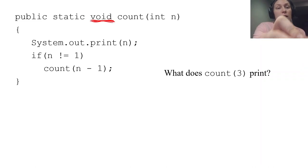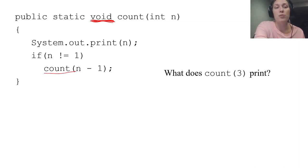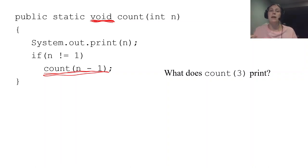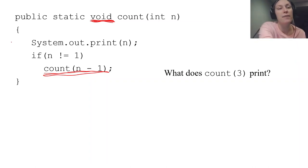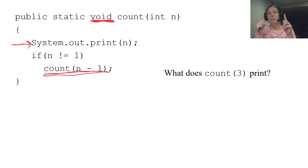In a void return, there's no return statement because you're not returning anything, but there is still a recursive call. The recursive call is count(n minus 1), so you can have a void recursive method. What's also new is we have a print statement in here. Remember, print prints everything on the same line without moving the cursor to the next line on the console, so you'll see everything printed on one line.